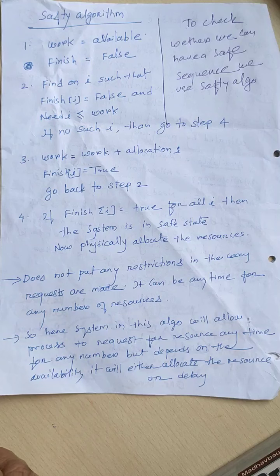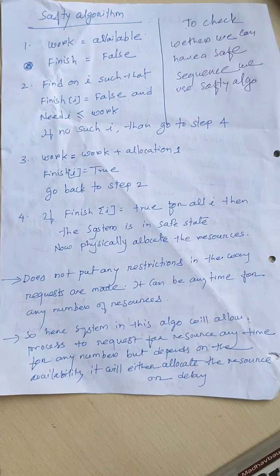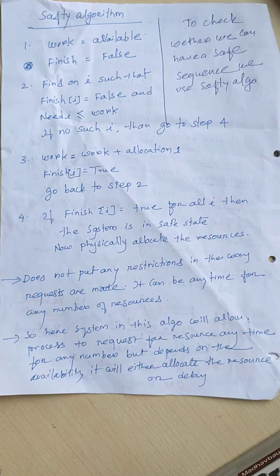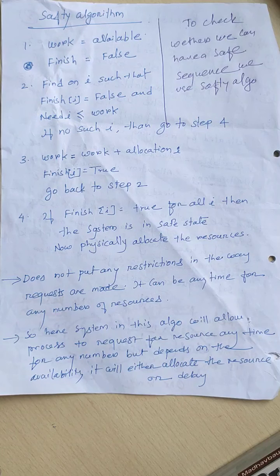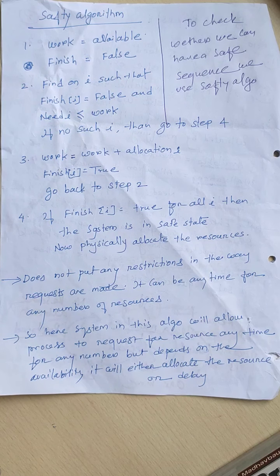We already saw that Banker's algorithm is used as part of a deadlock avoidance strategy. Banker's algorithm uses some variables as part of its data structure, and with the help of those variables, it decides whether to physically allocate resources to a process or not. Banker's algorithm uses one more algorithm to decide whether the newly formed state after allocation of resources to a process will be a safe state or not. If that state proves to be a safe state, then only physically resources are allotted to the process by Banker's.